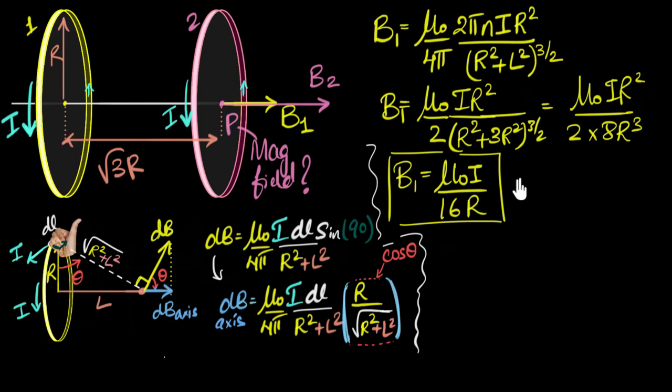All right, so this will give me mu naught i divide by 16 r. So that's B1 for me. Now let's calculate B2. Same formula. But for B2, what's l? Well, since I'm calculating at the center for B2, l is zero. So it's going to be mu naught by two i, r squared divided by r squared plus l squared, l is zero. So it becomes r cubed. And that gives me B2 as mu naught i by two r.